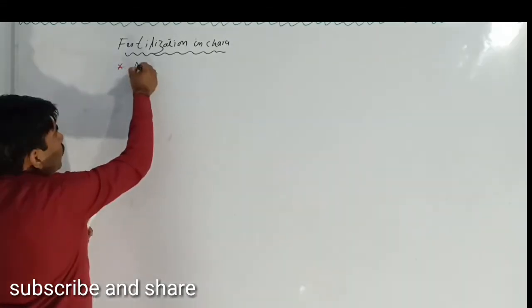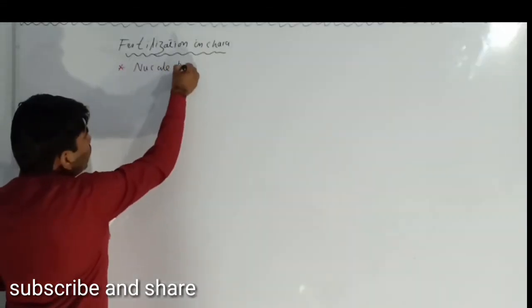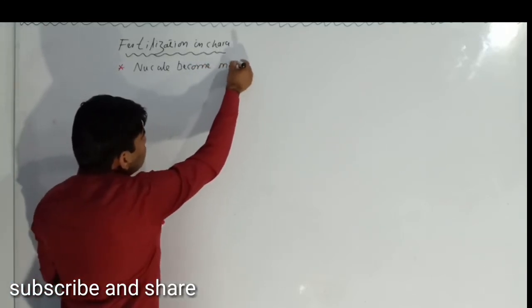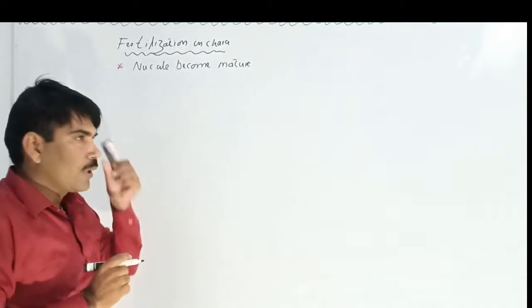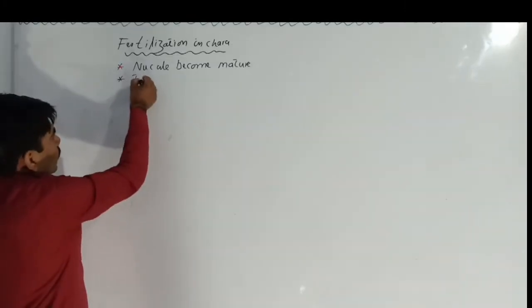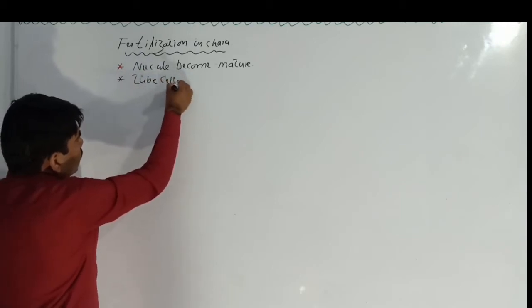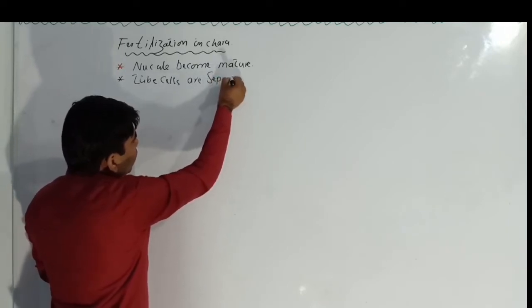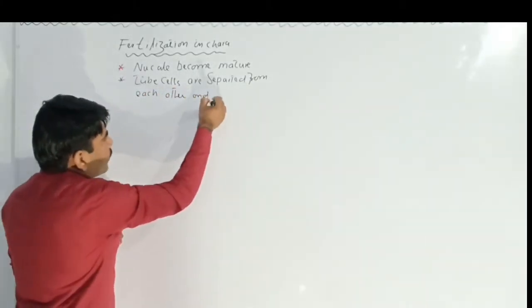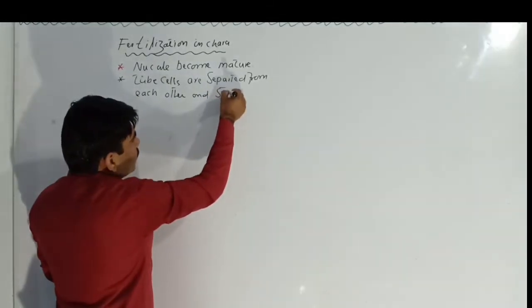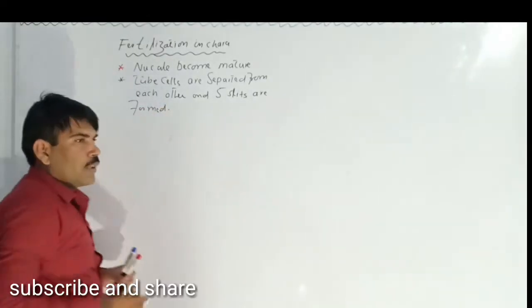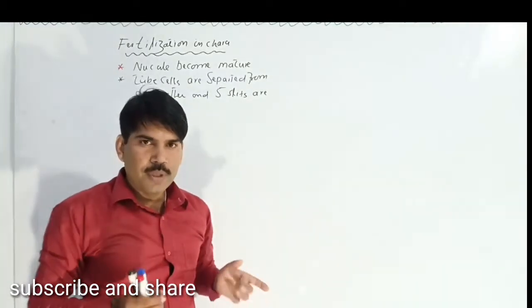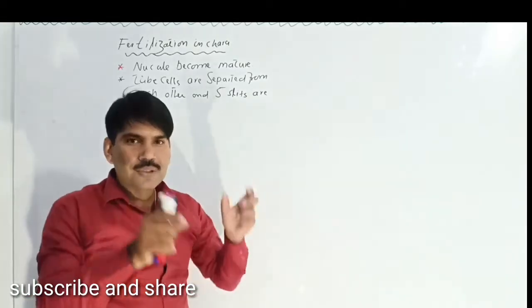When the nucule becomes mature, the tube cells of this nucule are separated from each other. So we can write here: tube cells are separated from each other, and five slits are formed. It means when the nucule becomes mature, the tube cells become separated and five openings, also known as slits, are formed.